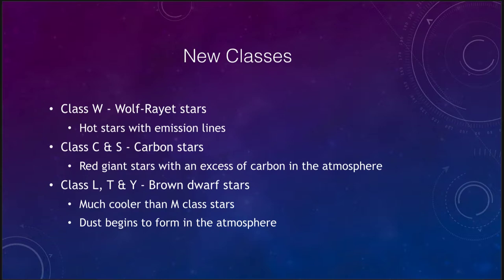Everything was reclassified to become temperatures, and that is the basis of the classification used today. New classes have been added as new discoveries were made. The Wolf-Rayet stars are class W — these are extremely hot stars with emission lines, giving off brighter lines rather than dark lines, which are associated with most stars.